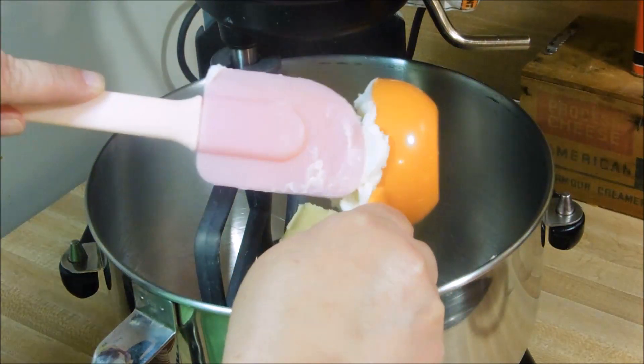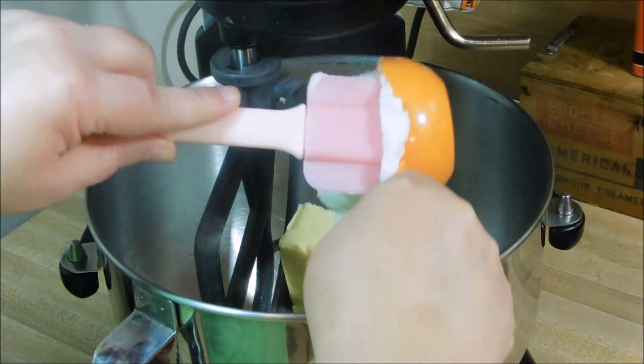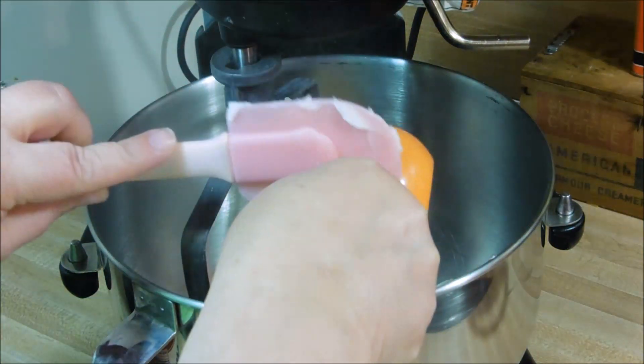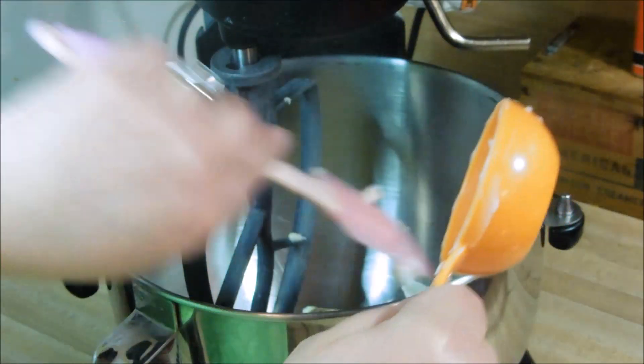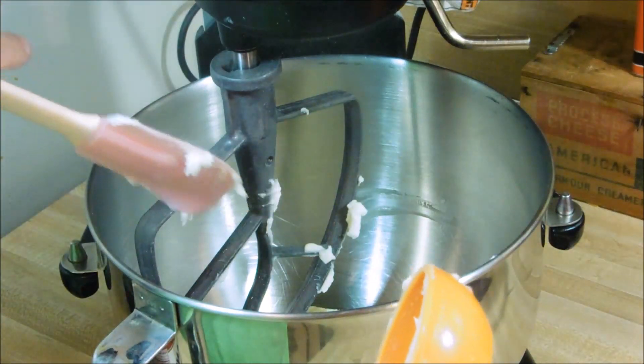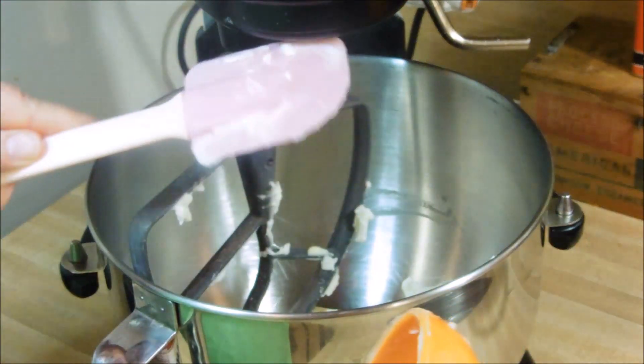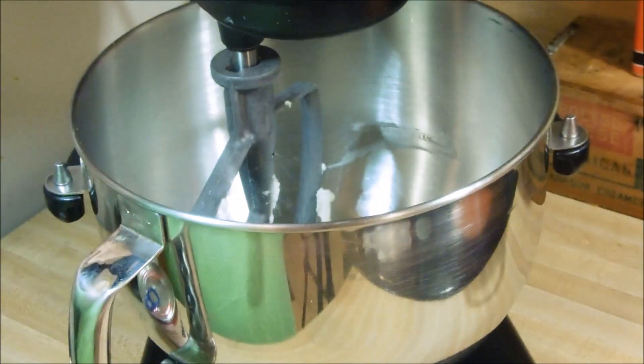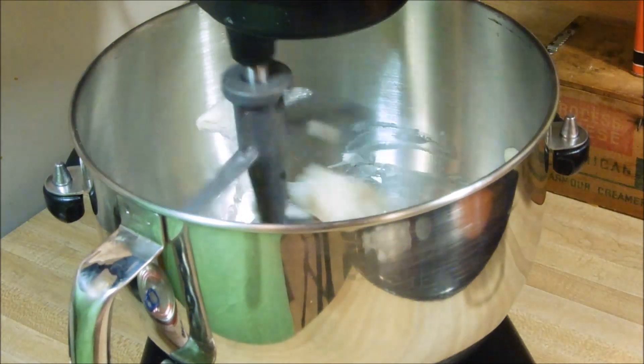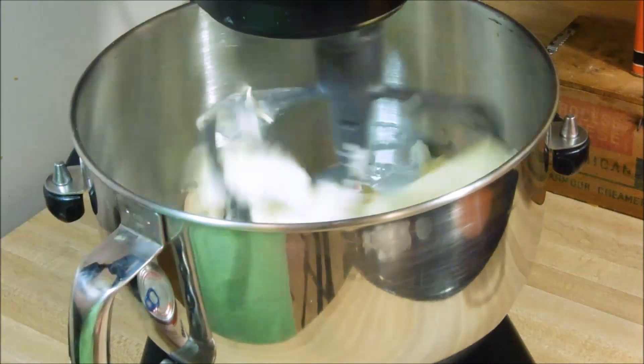You're going to need one cup of butter, or two sticks, and one half cup of vegetable shortening. You are going to cream these together for a good probably three minutes.